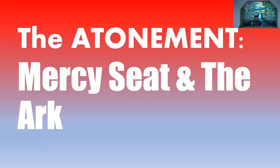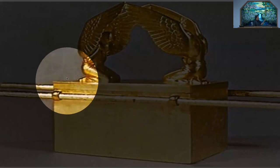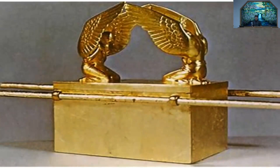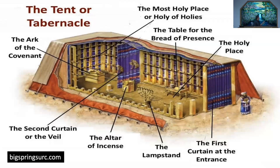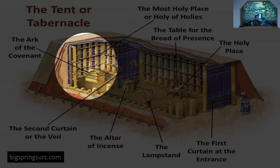The atonement, the mercy seat, and the Ark of the Covenant. The mercy seat is actually the lid — the top covering of the Ark of the Covenant. Inside the Ark of the Covenant were the Ten Commandments, Aaron's rod, and the golden pot of manna. The Ark of the Covenant was located inside the most holy place, or the holy of holies, and only the high priest could enter the holy of holies, once a year.